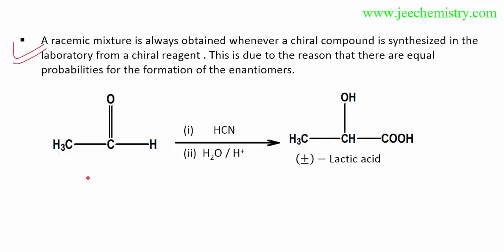The racemic mixture is always obtained whenever a chiral compound is synthesized in a laboratory from an achiral reagent. When an achiral reagent is used to synthesize the chiral compounds, a racemic mixture is obtained. This is due to the reason that there is an equal probability for the formation of each enantiomer.